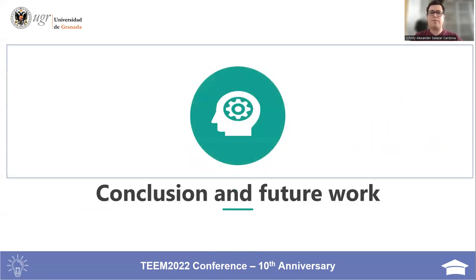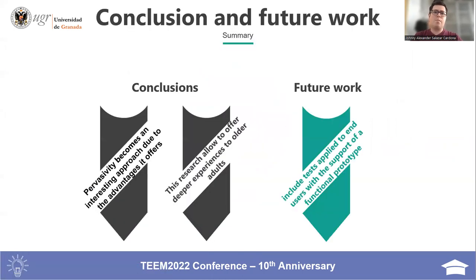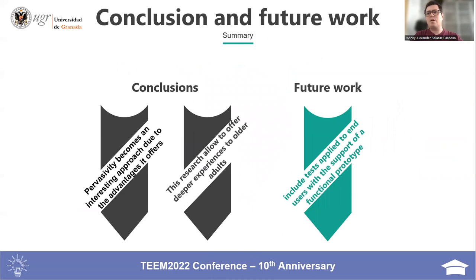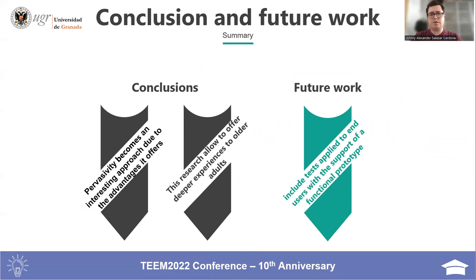Conclusion and future work. Pervasivity becomes an interesting approach due to the advantages offered to older adults. The research offers advancements in the design of pervasive serious games focused on learning in older adults, offering a total of six transversal elements that should be considered.